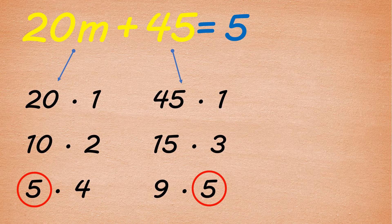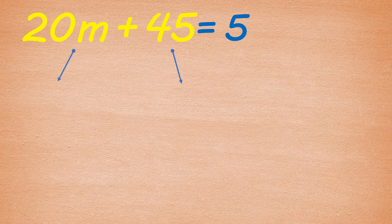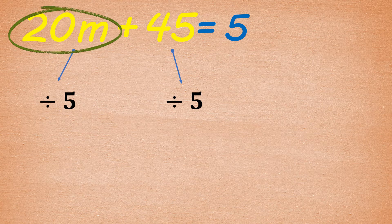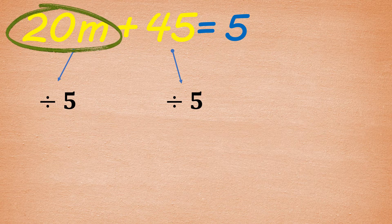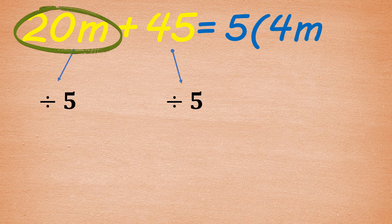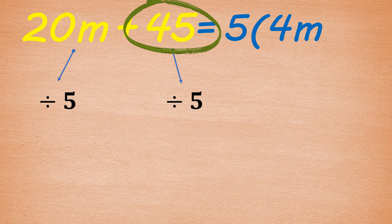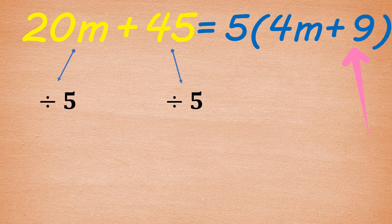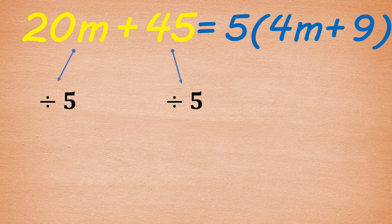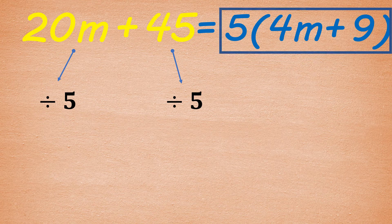Divide the given polynomial by the common factor, which is 5, to get the remaining factor. 20m divided by 5 is 4m, and 45 divided by 5 is 9. So we have 4m plus 9. Therefore, the factors of 20m plus 45 are 5 and 4m plus 9.